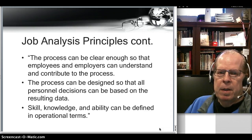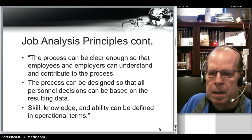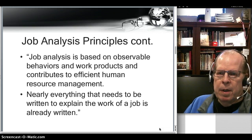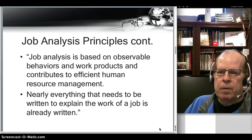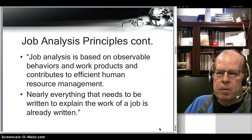There's no jargon other than jargon used on the job, so the employee would know. The process can be designed so that all personnel decisions can be based upon the data, and that also prevents liability. Skill, knowledge, and ability can be defined in operational terms. Job analysis is based on observable behaviors and work products, so it contributes to efficient human resource management. And nearly everything that needs to be written to explain the work of a job is already written.